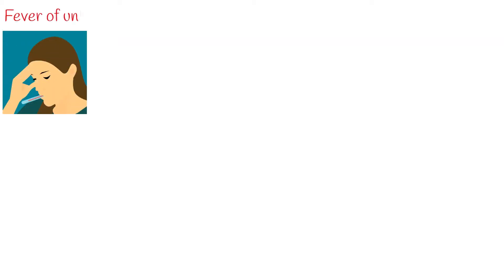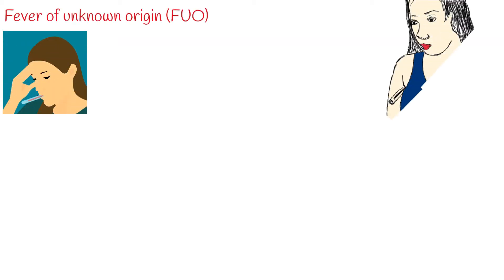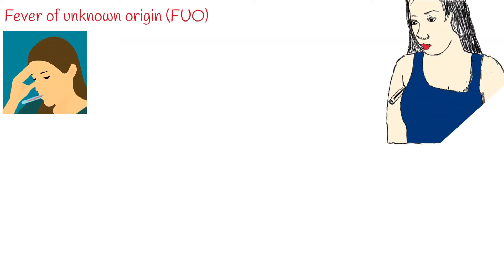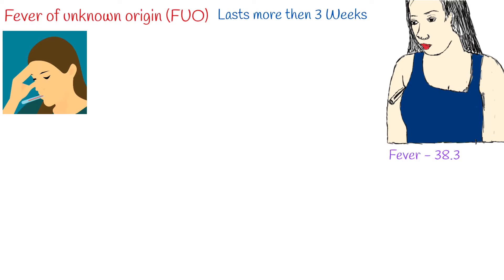If fever lasts more than 3 weeks and we cannot identify an underlying cause despite appropriate investigation, it is considered as fever of unknown origin, FUO. Fever is defined as a temperature higher than 38.3 degrees Celsius, or 100.9 Fahrenheit.